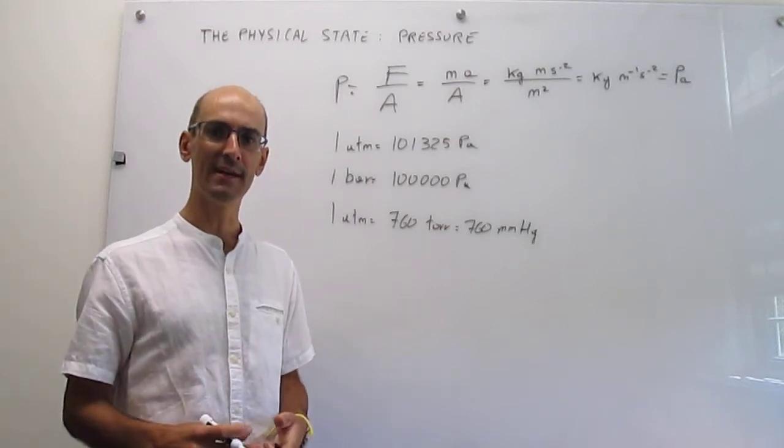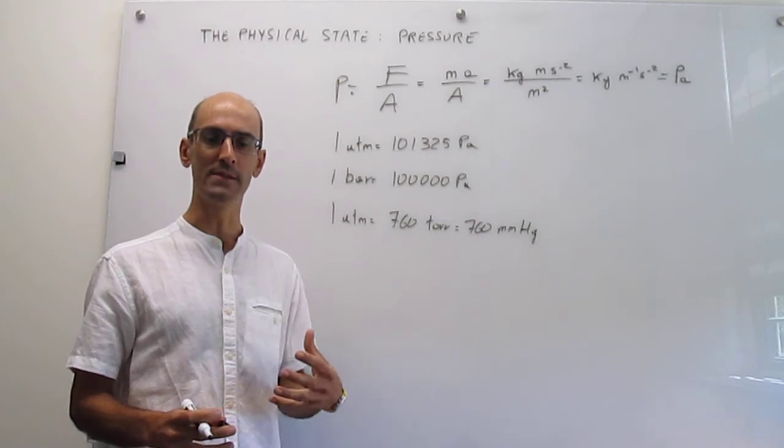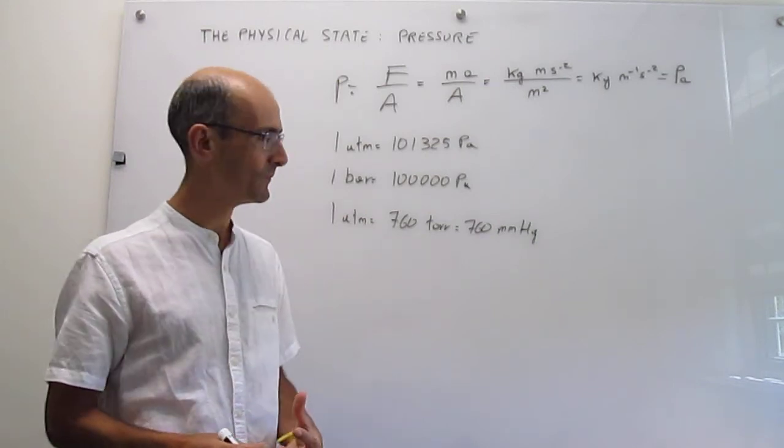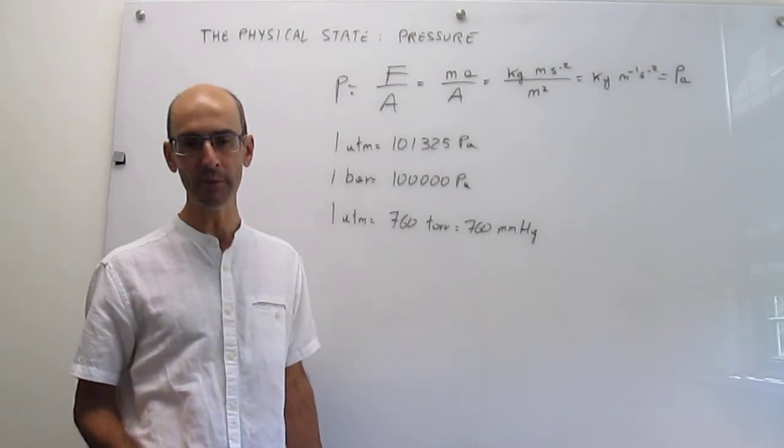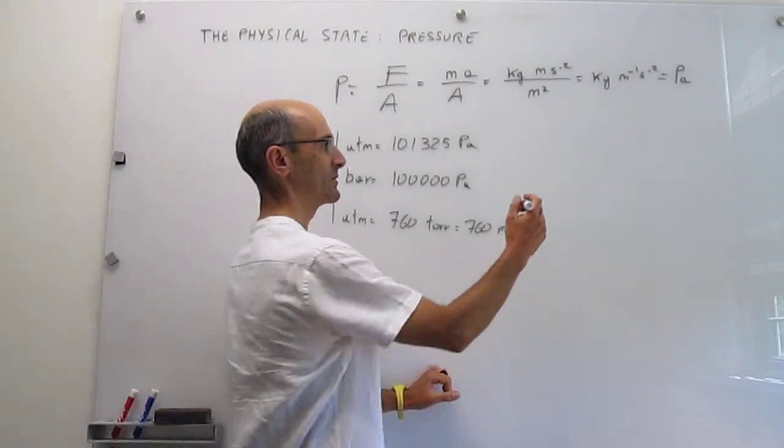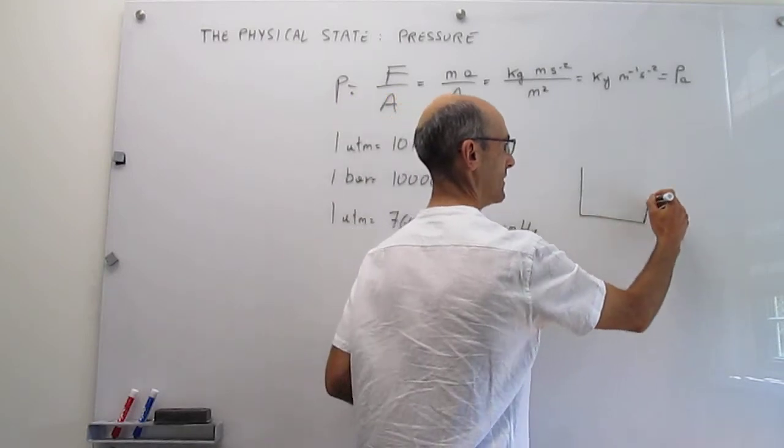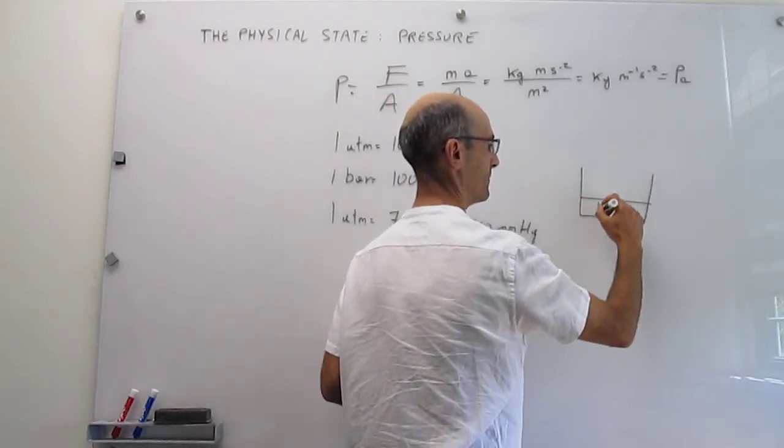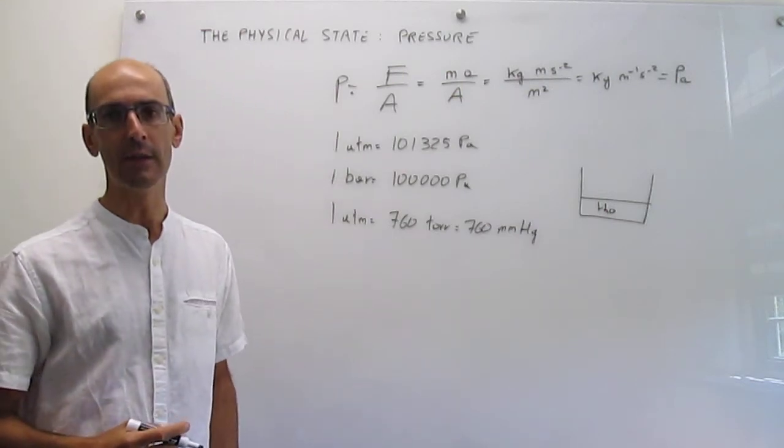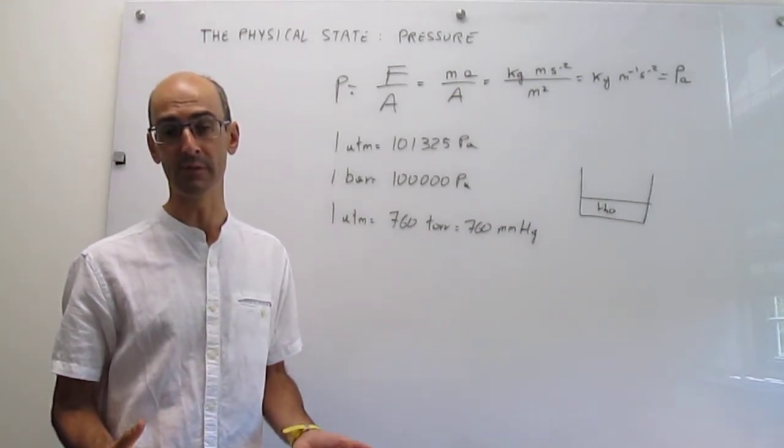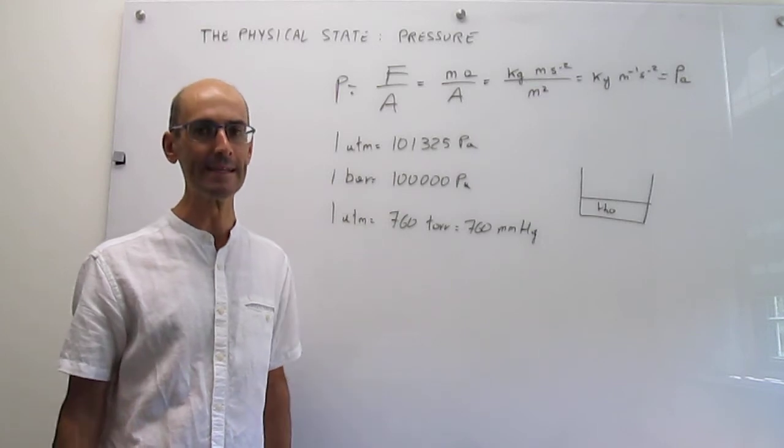Now let's retake the discussion of the atmospheric pressure. If you have a sample that is open to the atmosphere, suppose that you have here a container and here you have some liquid water H2O. Since this is open to the atmosphere, the pressure of that sample will be the atmospheric pressure, so that will be 1 atm.